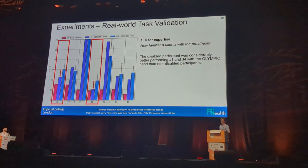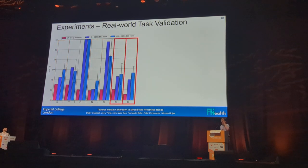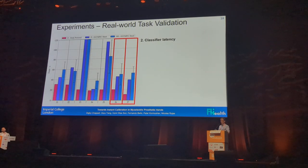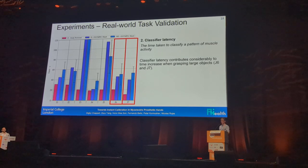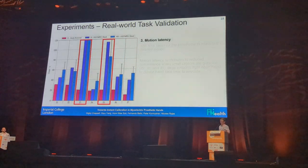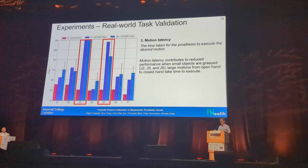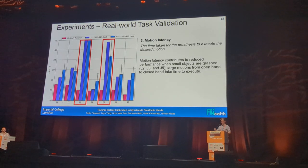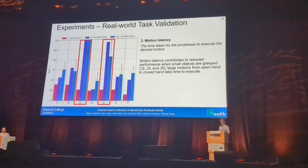For large objects where motion execution time is relatively low, classifier latency dominates the increase in time — that's the time taken to recognise what you want to do and start the action. For small items like paper clips or stacking checkers, motion latency is a big contribution — the hand has to move all the way from open to close, and if you miss the grasp you have to do it all over again, taking a couple of seconds. That's an inherent limitation of discrete control methods.